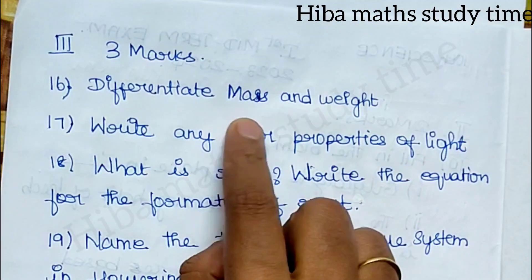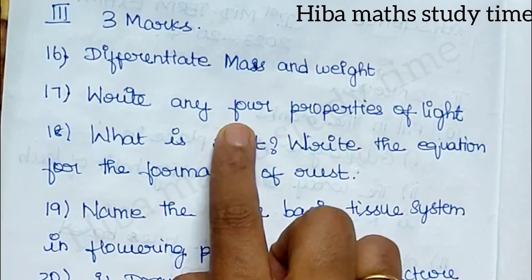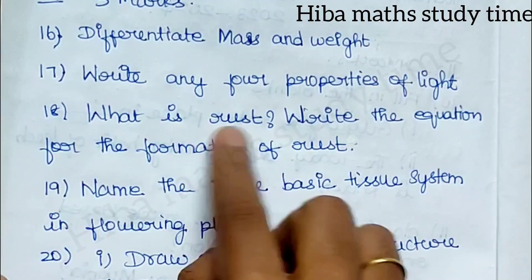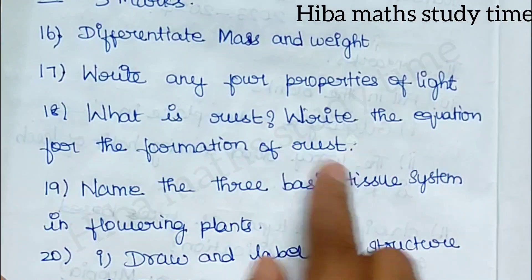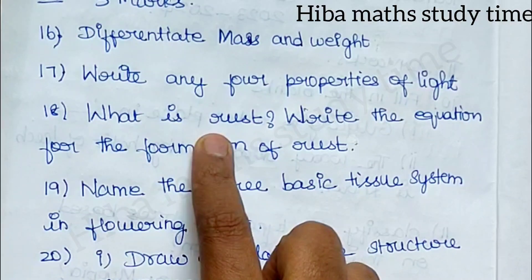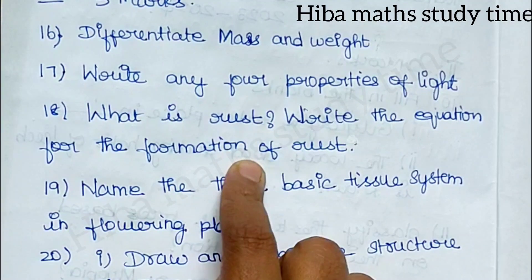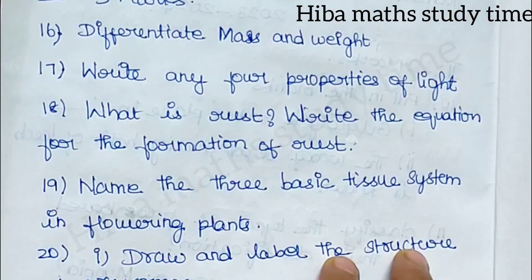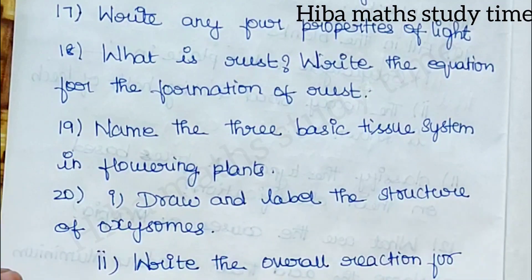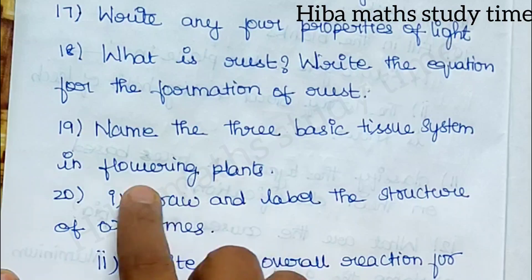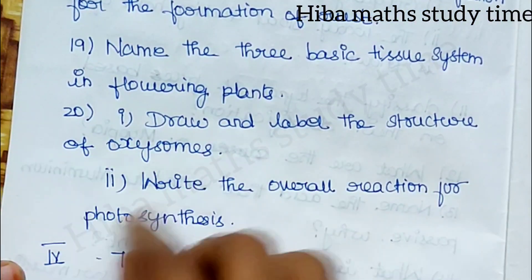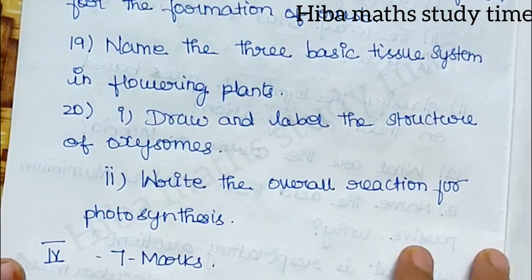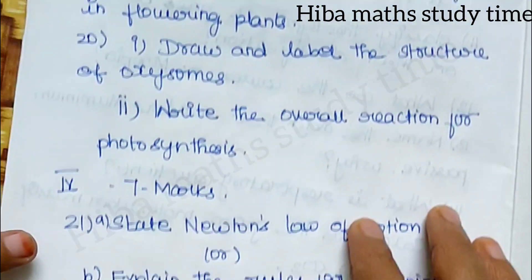Differentiate mass and weight. 17th question: Write any 4 properties of light — if they ask 4 properties, you can write 5. What is rust? Write the equation for the formation of rust — this is a 3-mark question. For rust, you need to write 1 mark for the definition and 1.5 marks for the equation. For slow learners, at least write what rust is — that gets you 2 marks. Name the 3 basic tissue systems in flowering plants. Draw and label the structure of oxysomes. Write the overall reaction for photosynthesis — please write the equation.